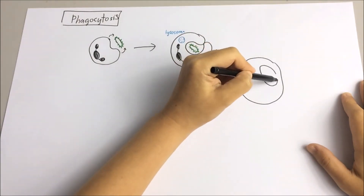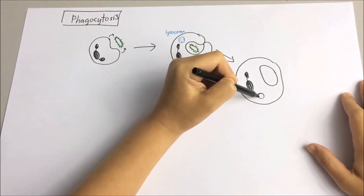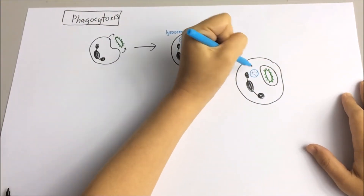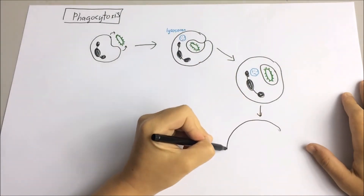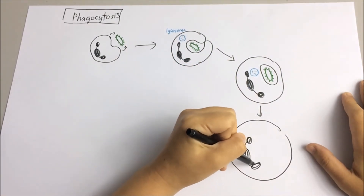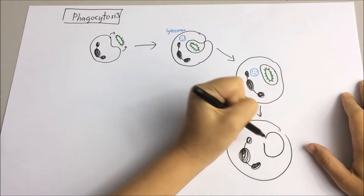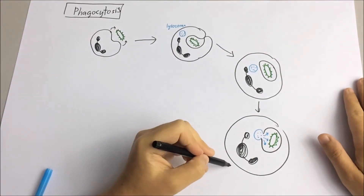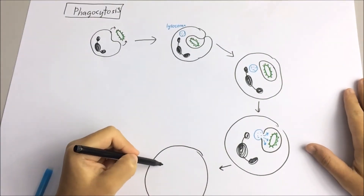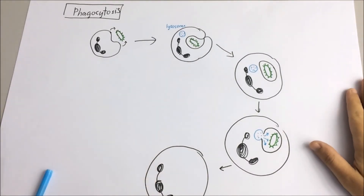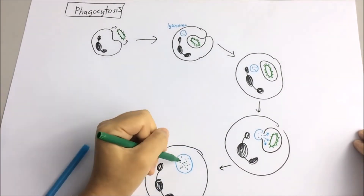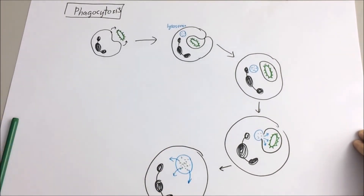Once the phagocyte has ingested the bacterium, it forms a phagosome. This phagosome combines with the lysosome, and the hydrolytic enzymes inside the lysosome are released into the phagosome. The bacterium inside is then killed by these enzymes, and the digested products are released back into the cytoplasm of the phagocyte.